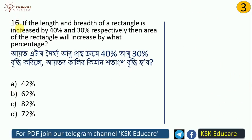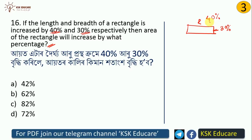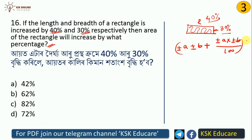If the length and breadth of a rectangle are increased by 40% and 30% respectively, by what percentage will the area increase? We use the formula: percentage change in area equals plus-or-minus A plus plus-or-minus B plus (plus-or-minus A times plus-or-minus B) divided by 100. Since both are increases, we use plus signs.